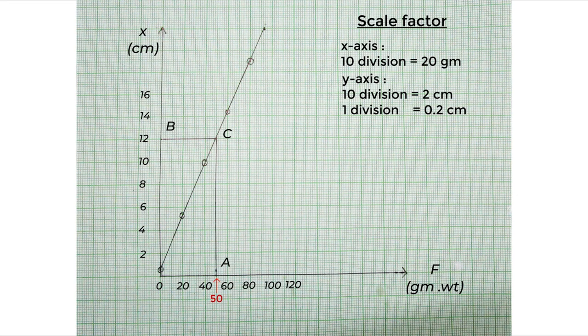The graph comes to be a straight line for both loading and unloading. The straight line should pass through the origin, but in our case it is not, which means there is a small experimental error occurred.